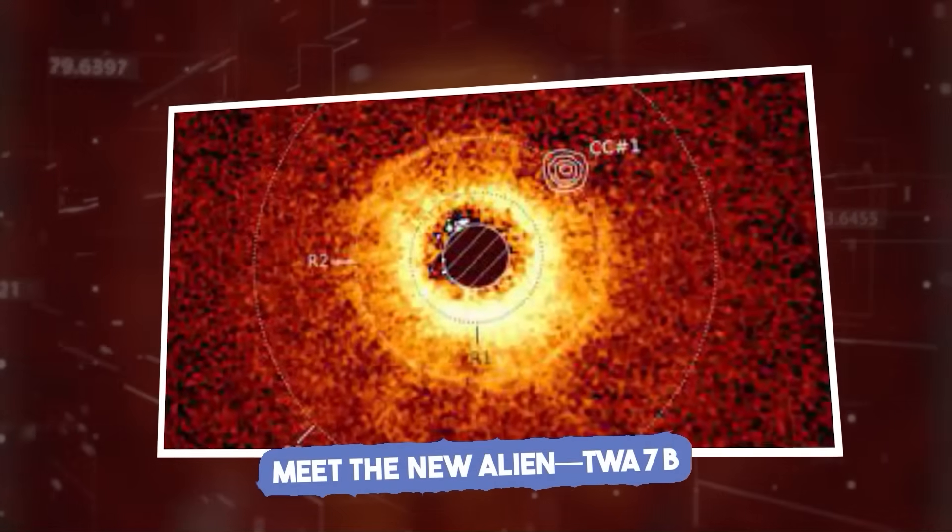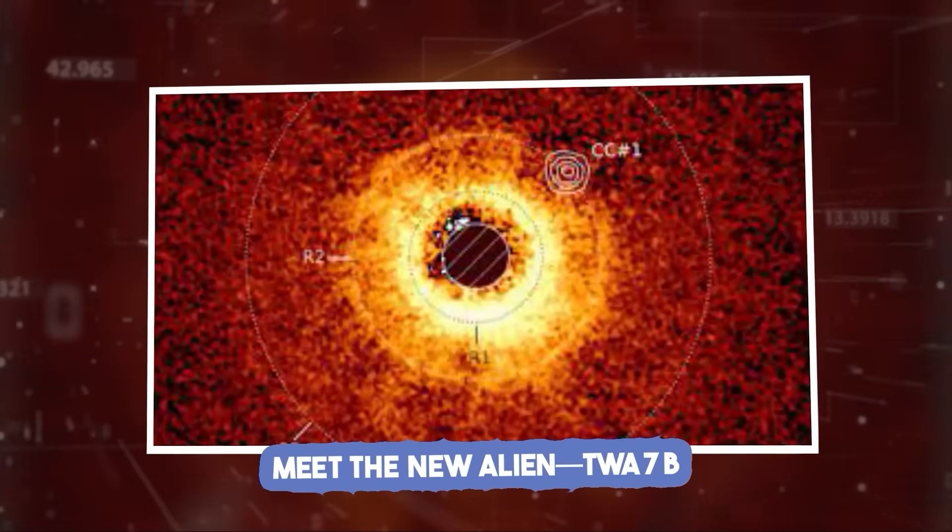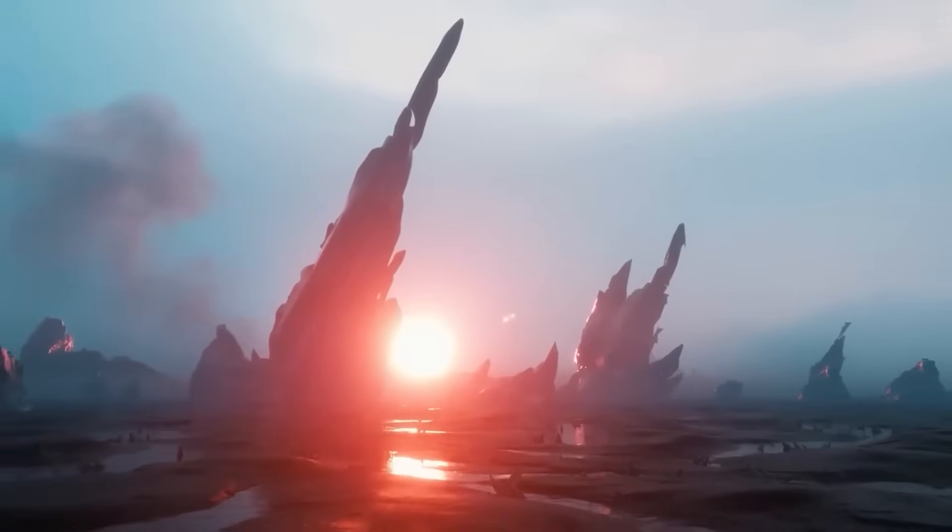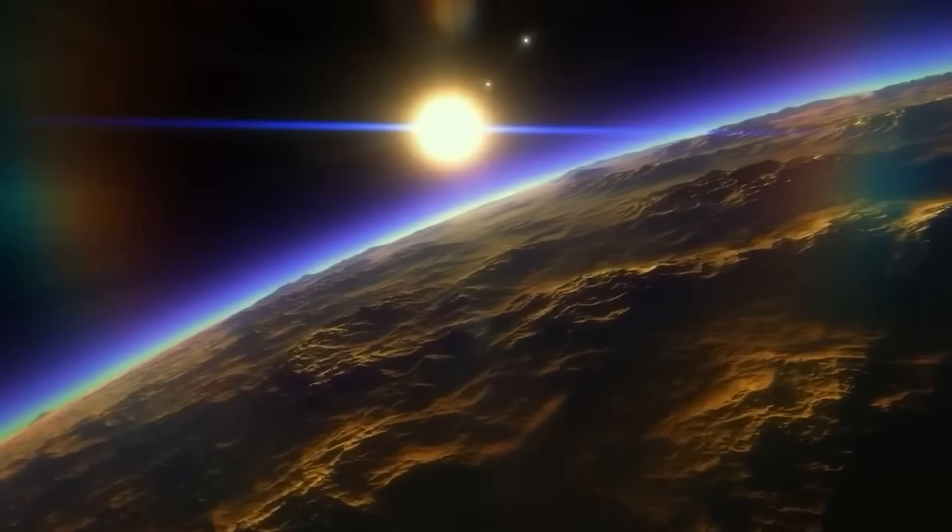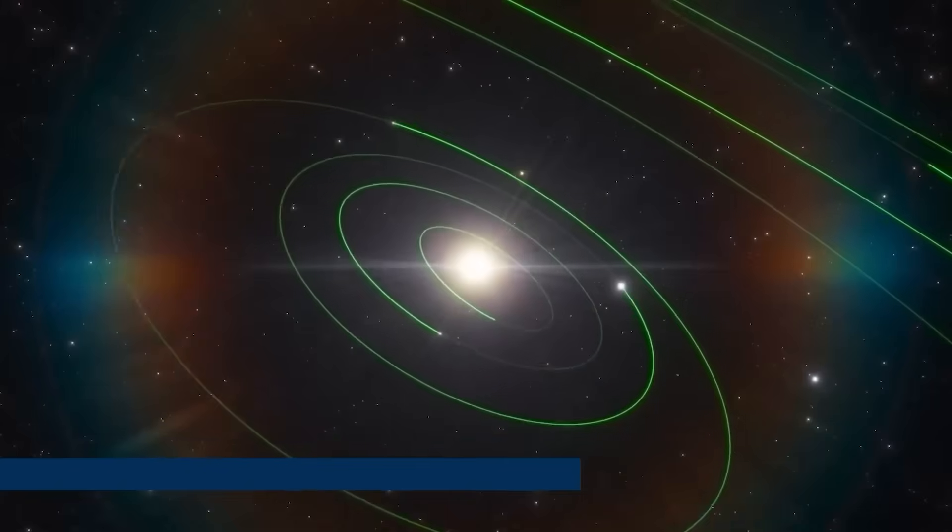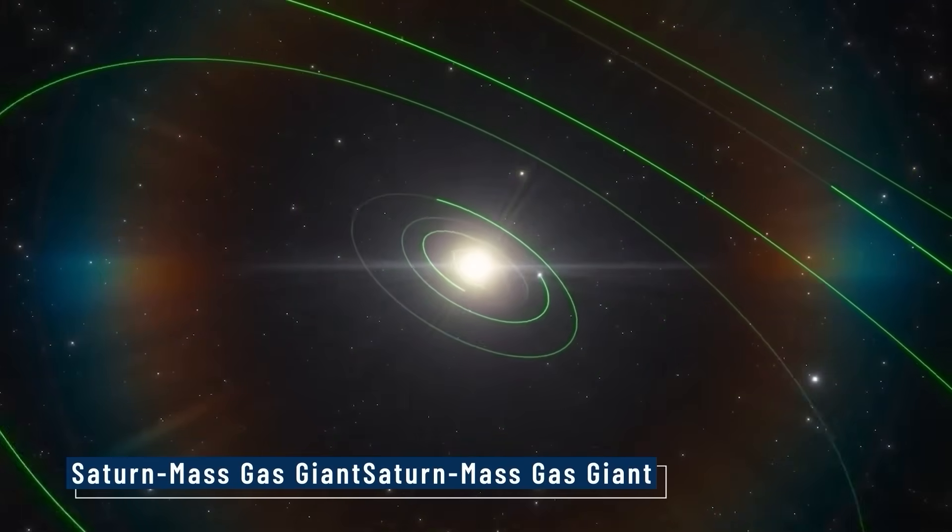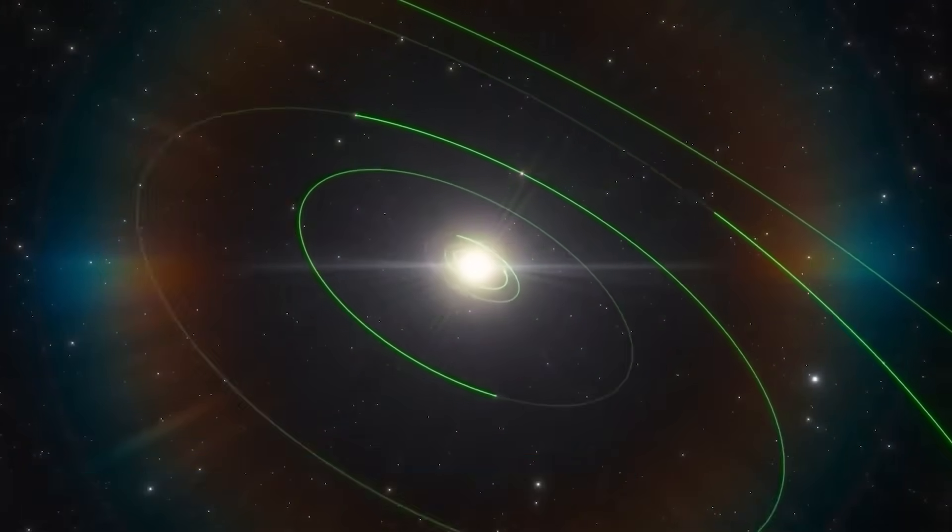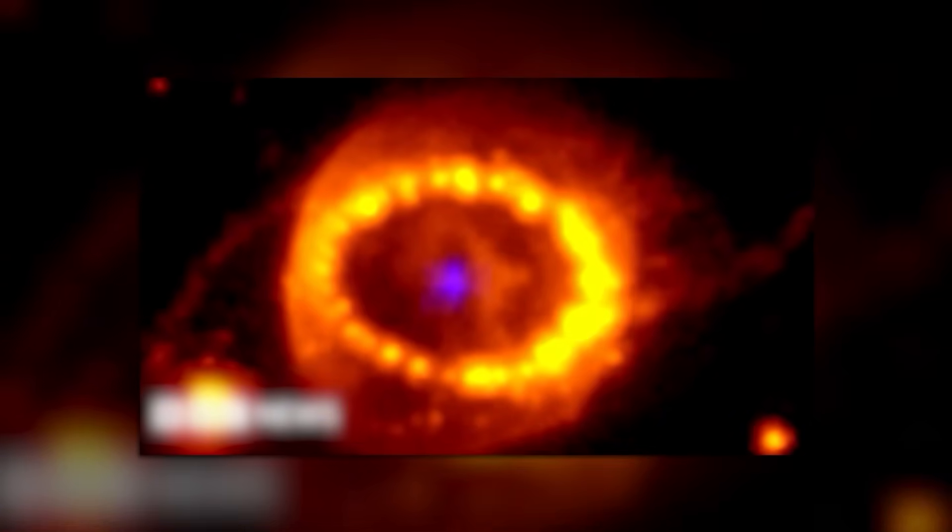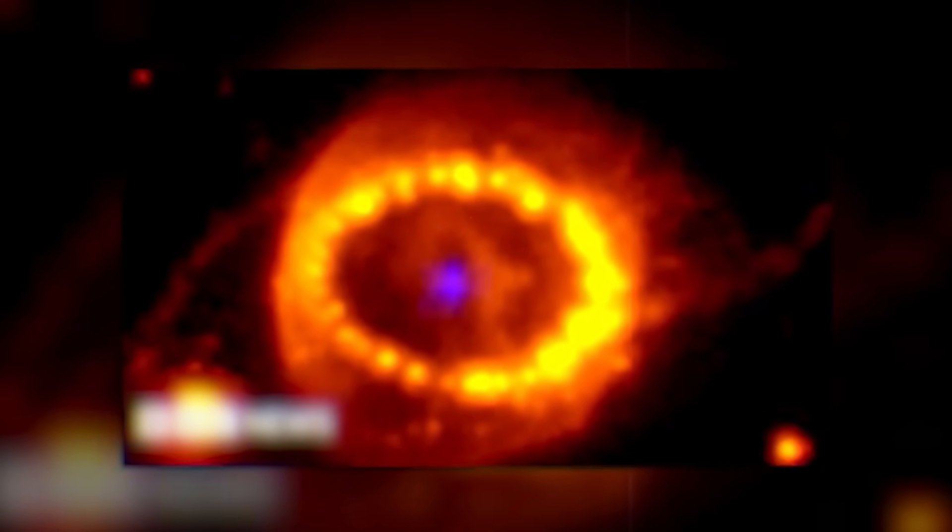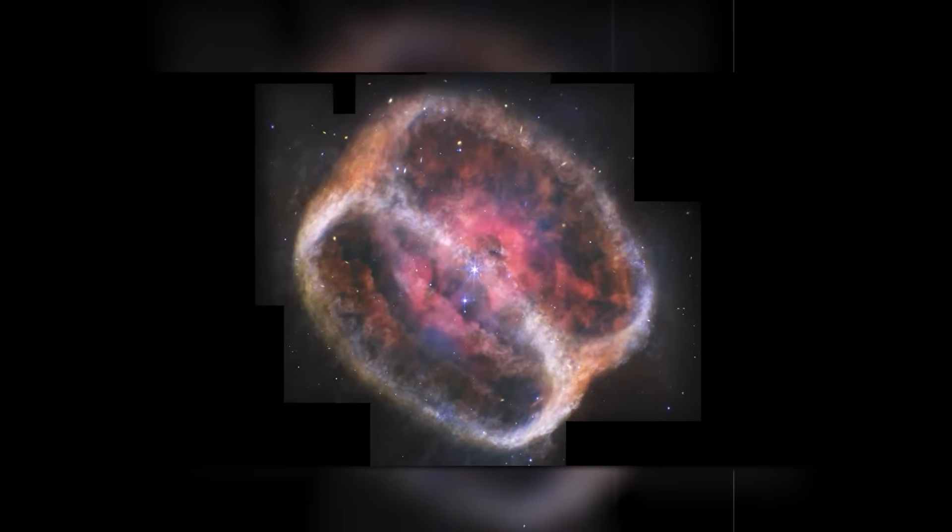Meet the new alien, TWA-7b. Let's take a closer look at this newly spotted alien world. TWA-7b is no Earth twin. It's a Saturn mass gas giant, orbiting a star barely six million years old. That makes it a newborn by cosmic standards. The star, TWA-7, belongs to a loose group of young stars, meaning the planet hasn't had time to cool and fade.